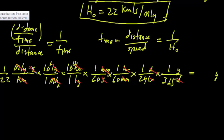And then all I do is multiply 1 over 22, multiply by 10 to the 6 times 10 to the 13, divided by 60, divided by 60, divided by 24, divided by 365, and what I get is about 14 billion years.